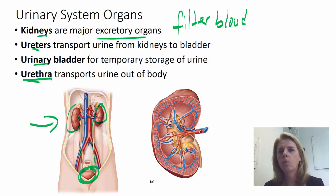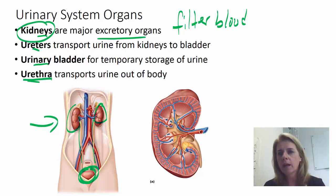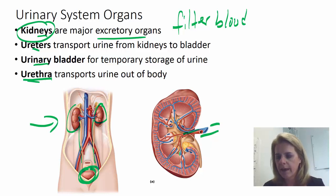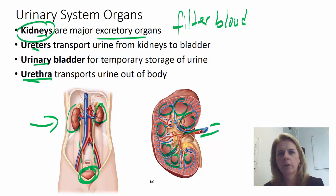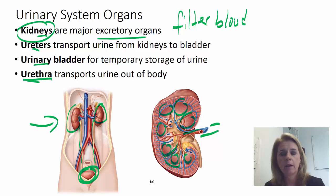The ureters, bladder, and urethra are basically just transport mechanisms — they don't really do anything. All the work of the urinary system is done by the kidneys: the filtration, production of hormones, and things like that. The kidneys are very vascular with a lot of blood supply — you have your renal arteries and renal veins. Blood goes into the renal arteries, and the kidneys are divided into lobes. Blood vessels go into each lobe and divide until they form capillaries, and that's where blood filtration occurs, filtering out sodium, water, and things like that.